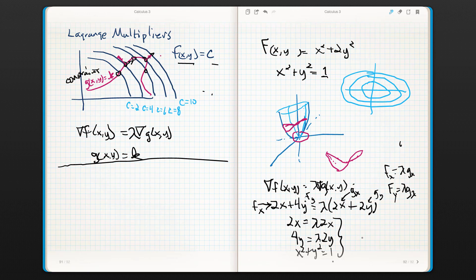Alright, so let's, we've got these guys right here. Let's see if we can figure this out. Now, it should be relatively obvious here that if 2x equals lambda 2x, then lambda has got to equal 1, right?